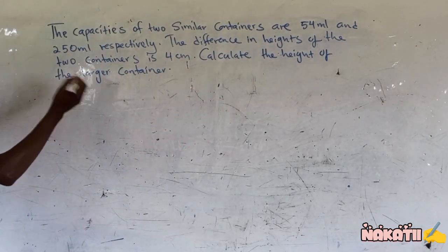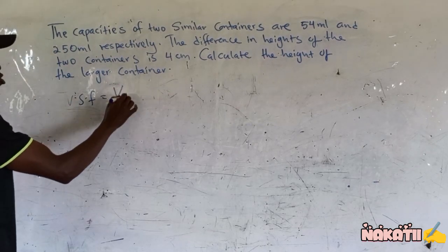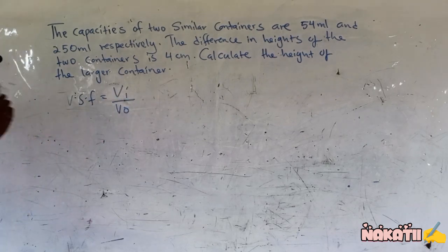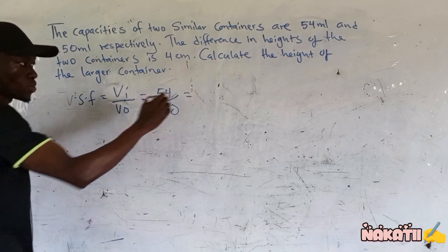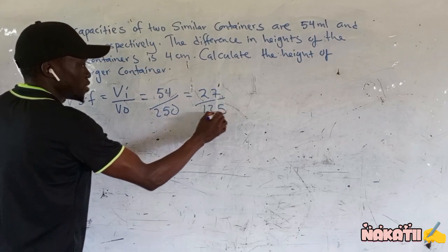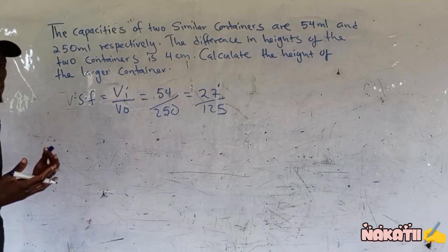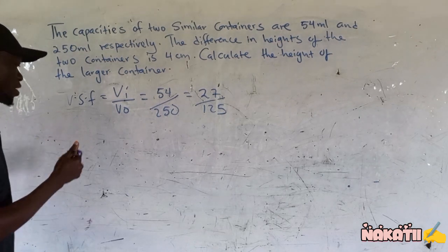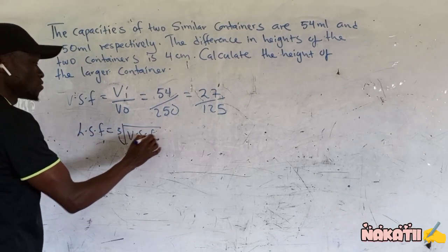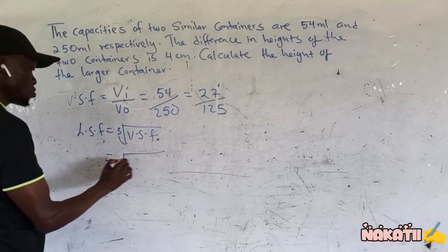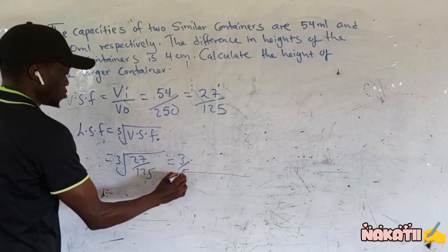I take the larger one as the object. Hence I can find the volume scale factor, because volume scale factor is volume of image divided by volume of object. When you do this, it is 54 divided by 250. When you simplify, you get 27 divided by 125 — that is our volume scale factor. We can then convert: linear scale factor is simply the cube root of volume scale factor, which gives us the cube root of 27 over 125, which is simply 3 over 5.